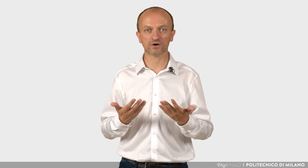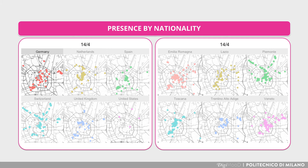Once this is done, we can also understand what are the privileged areas of the city depending on the provenance of the visitors. For instance, Dutch visitors tend to aggregate around the city center and the design district of Brera, while German visitors also visit the western and eastern districts, like Lambrate and Naviglio.